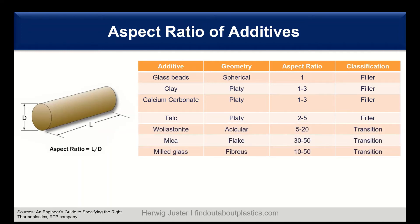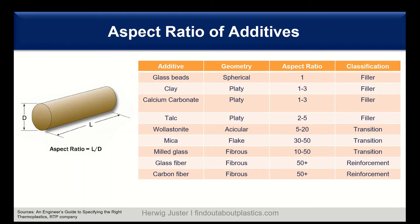The gap between filler and reinforcement is in a transition zone. There we have, for example, wollastonite, mica, and milled glass. Milled glass is already more fibrous in geometry, and mica comes in flakes — so they do not fully match either the filler or the reinforcement category. Then in the reinforcement category, we have two examples: glass fiber and carbon fiber, which are both fibrous in geometry and have an aspect ratio of 40 to 50 plus.